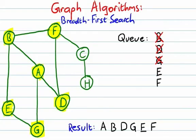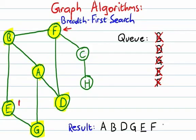We go back to the queue, which takes us to E. When we take a look at E, there's no place new to go from E either, so we're done with E. We come back to the queue to decide where to go next. F, the next vertex in our queue, does have a connected vertex we haven't seen yet — C. So we visit C, mark it as visited, and add it to the queue. Nowhere else to go from F, so we're done with F.